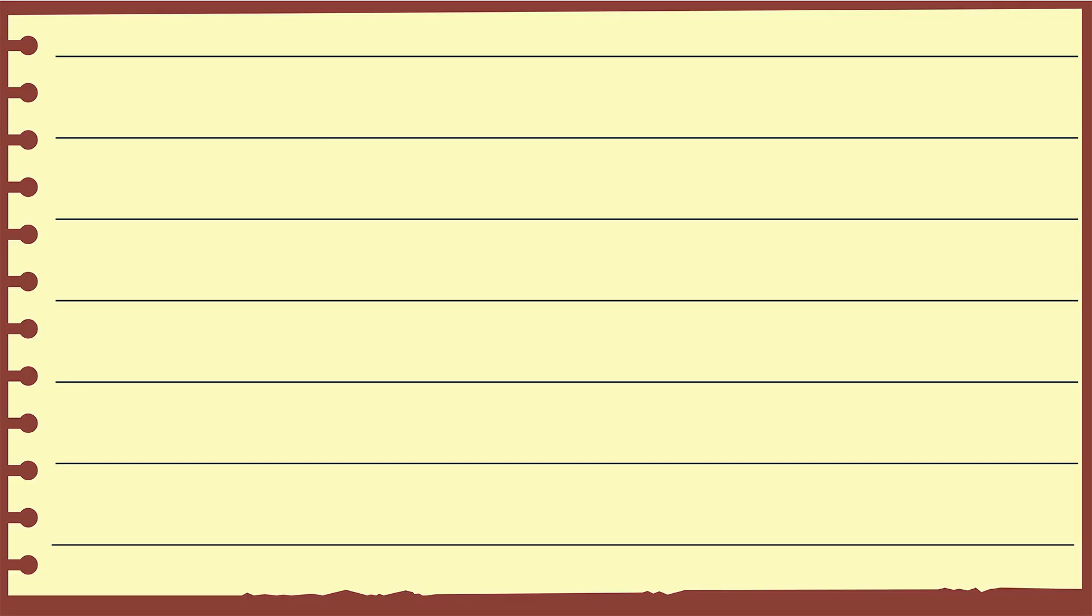Silicon rubber is an example of class H. A: true, B: false. The correct answer is true.